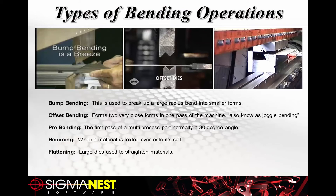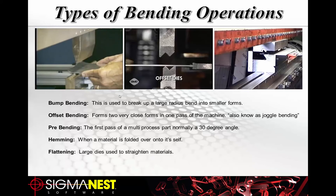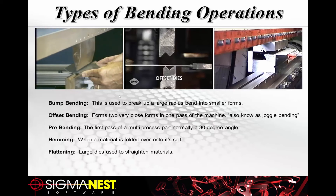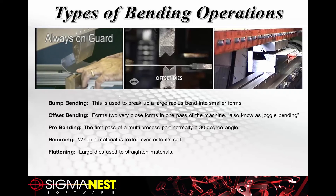Bump bending is used for large-radius bends or for bending radii outside of your tooling. Multiple hits are used to break up the bend — the operator performs several shallow bends to create the radius, and by about the third or fourth bend the radius starts to take shape. Machines also have safety features in place so you don't get hurt operating the machine or get caught between the press and die.